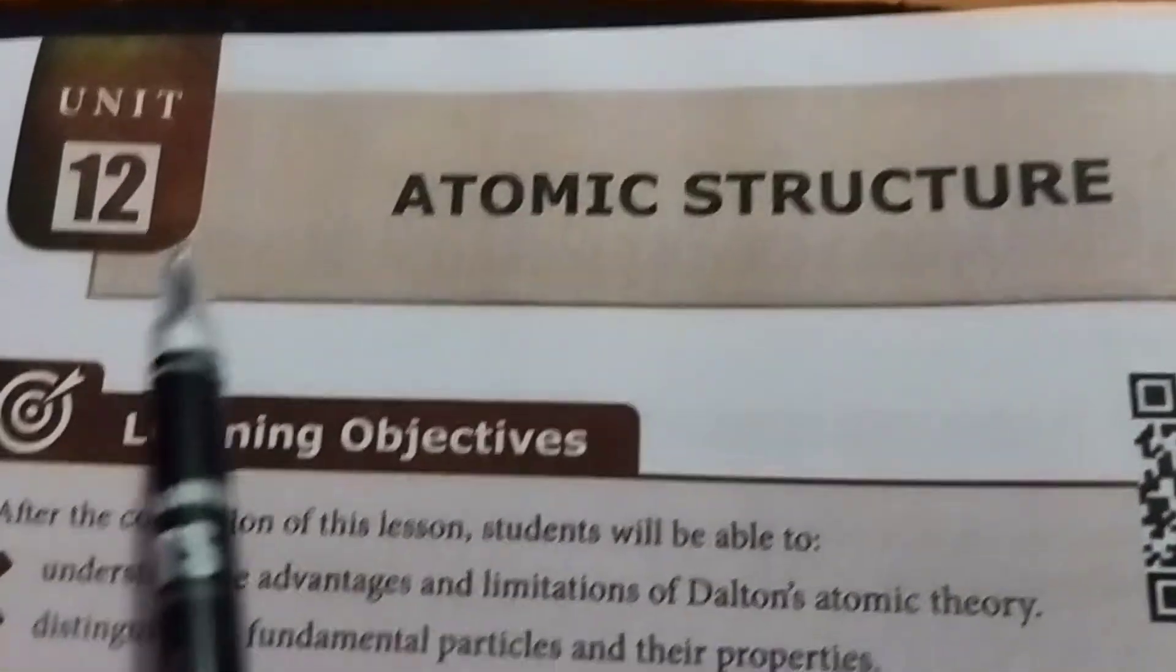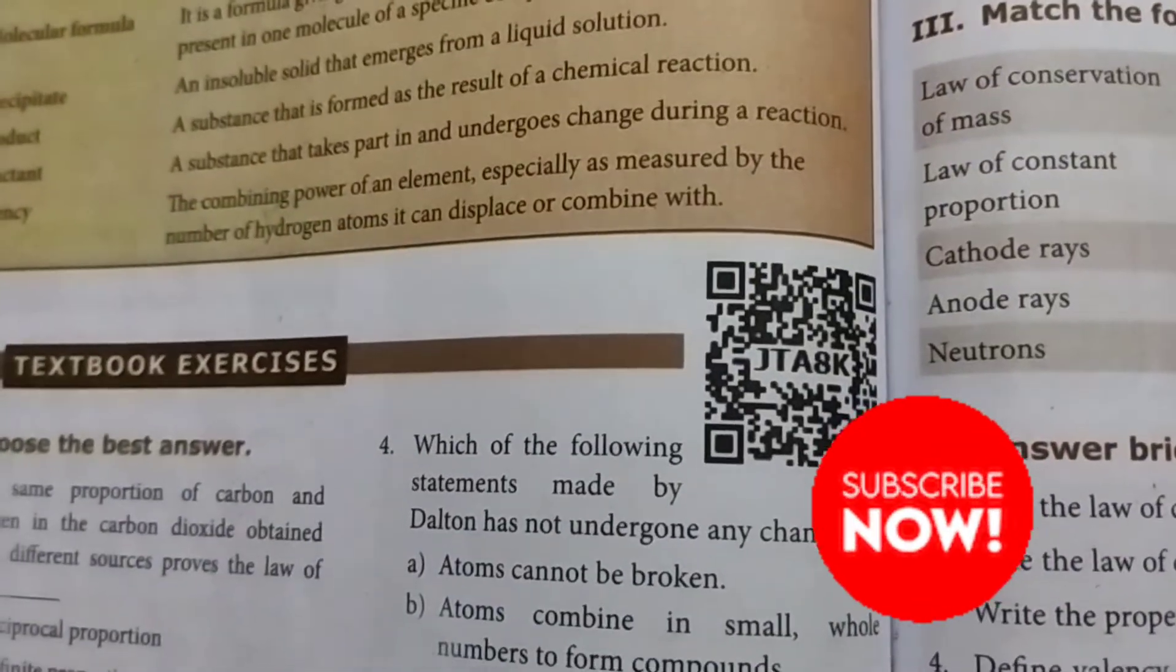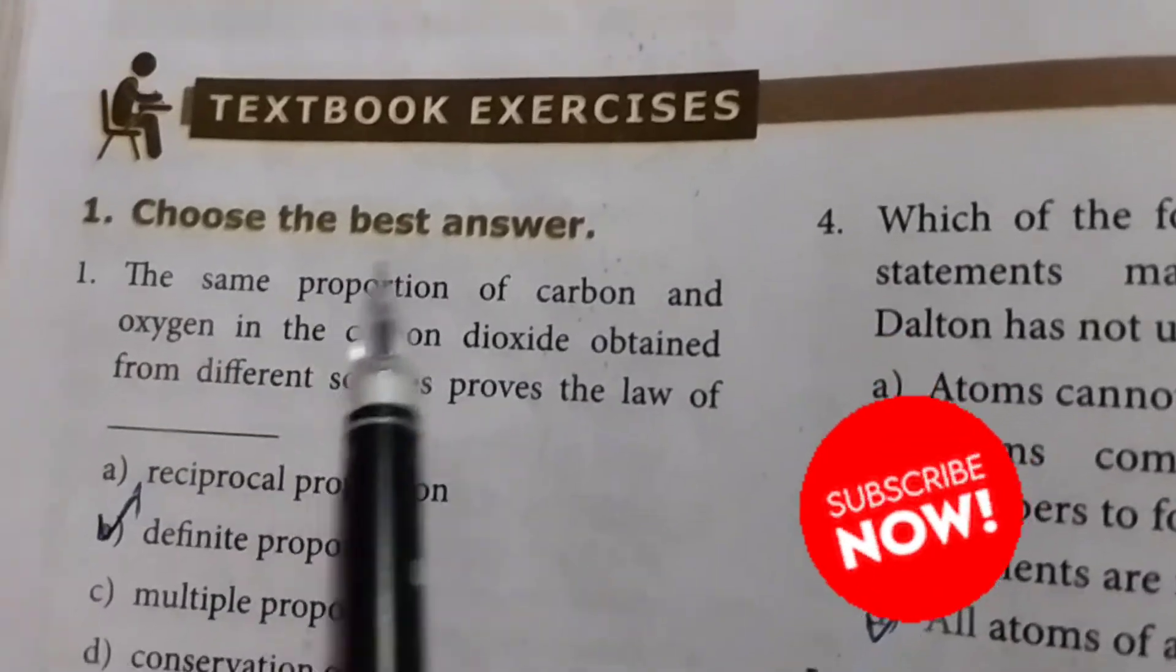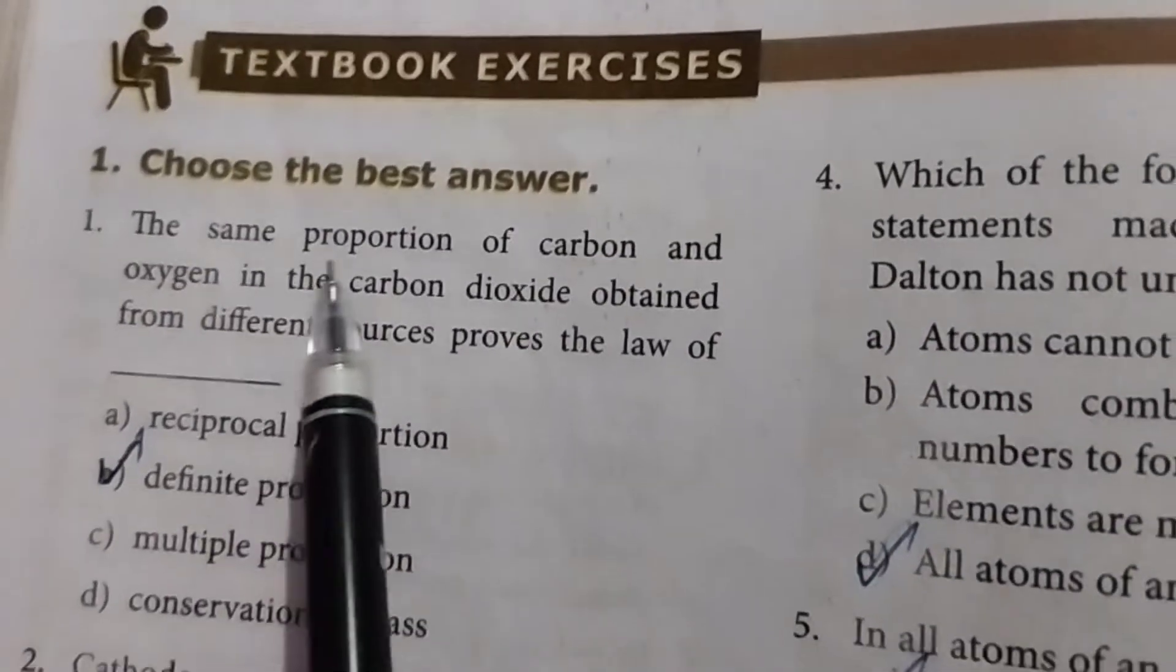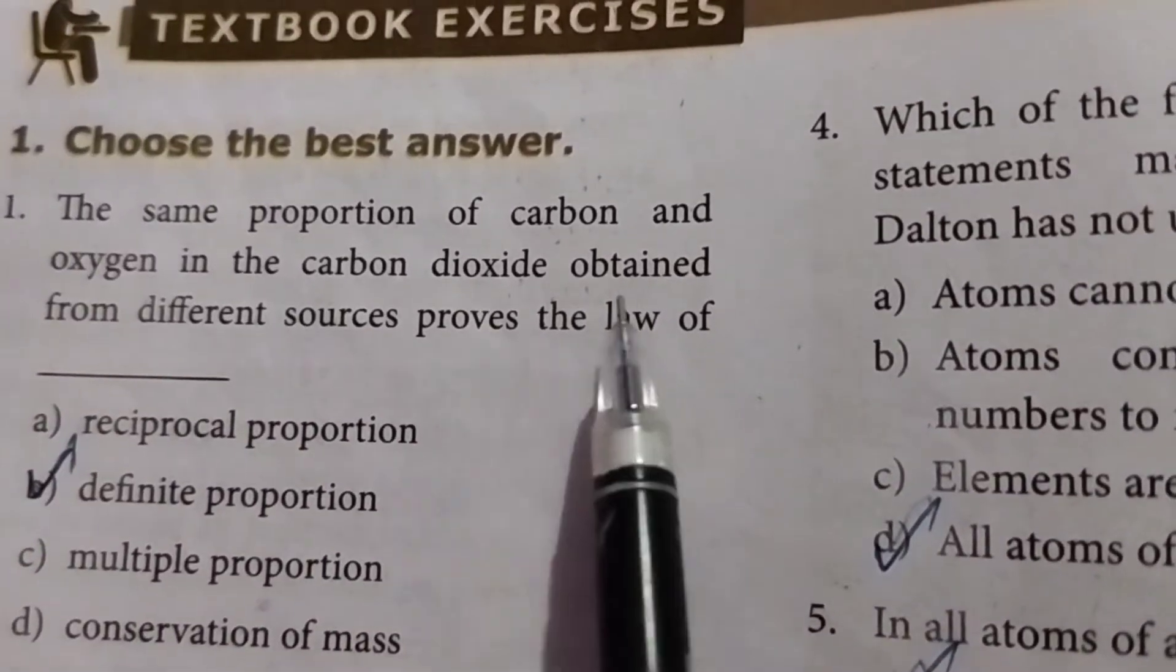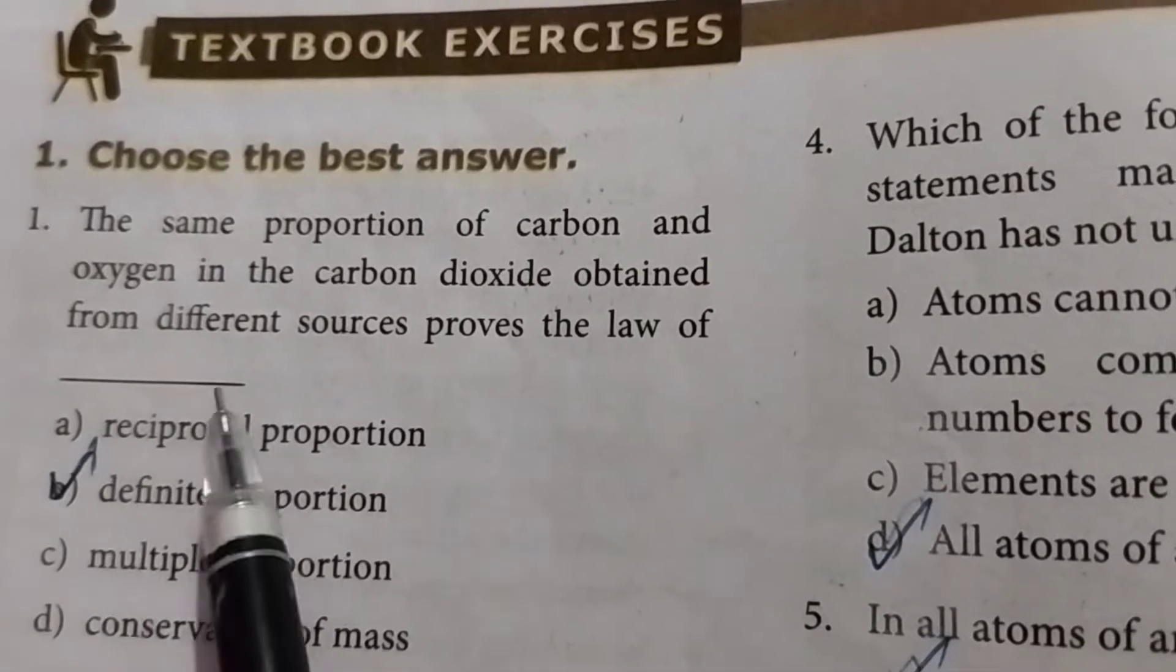8th Standard Science Unit 12 Atomic Structure, lesson from the book, page number 136. Roman letter 1, choose the best answer. First one: the same proportion of carbon and oxygen in the carbon dioxide obtained from different sources proves the law of definite proportion.